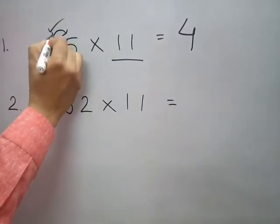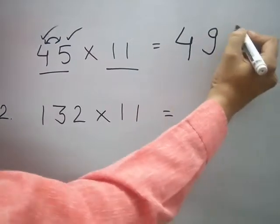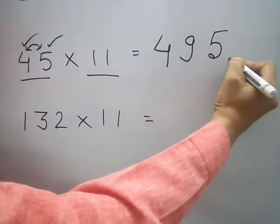What to do? I have to add 4 plus 5 is 9 and take this 5. So 4, 9, 5, this is your answer.